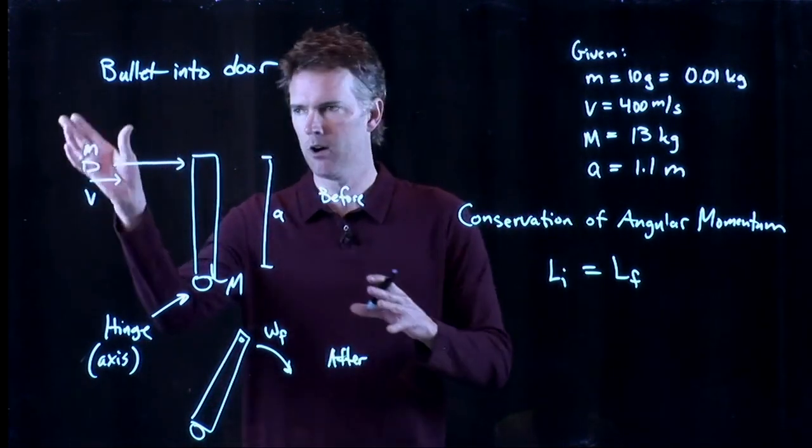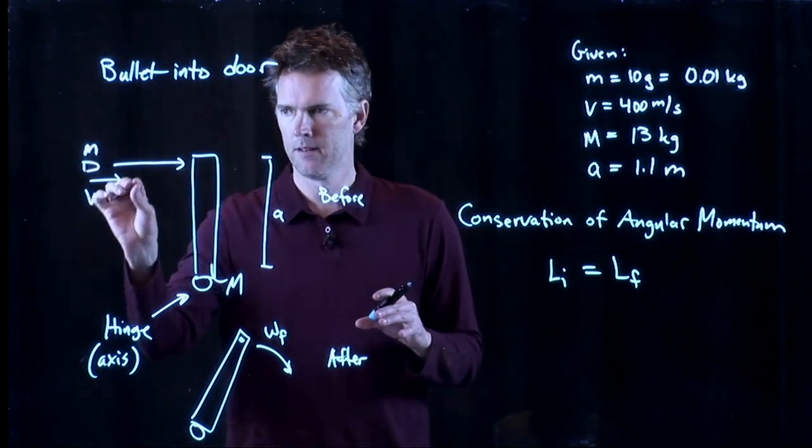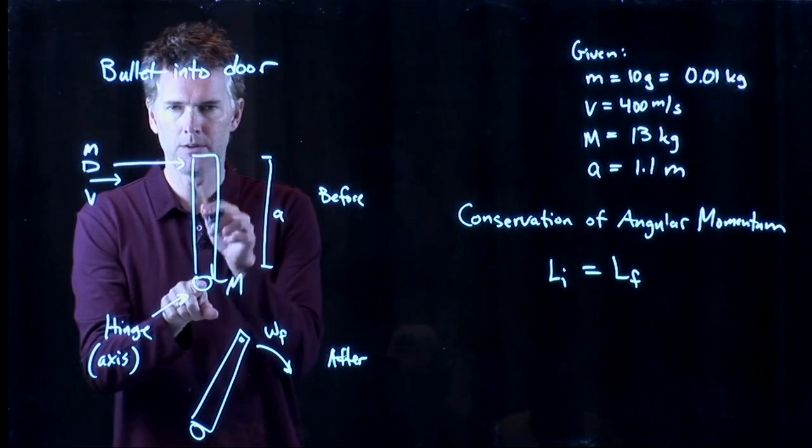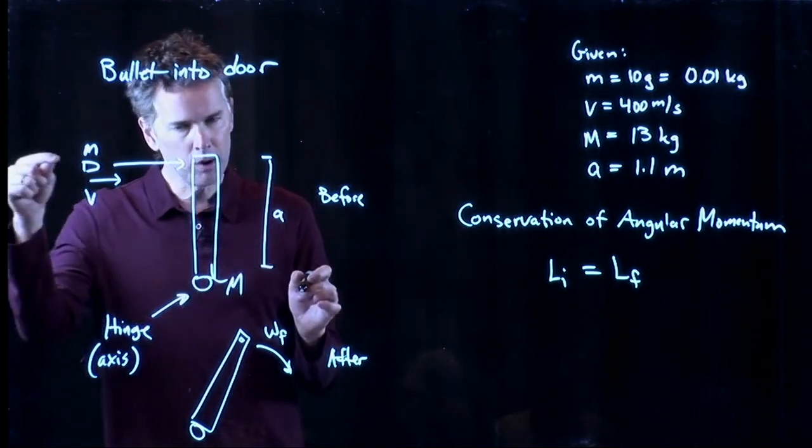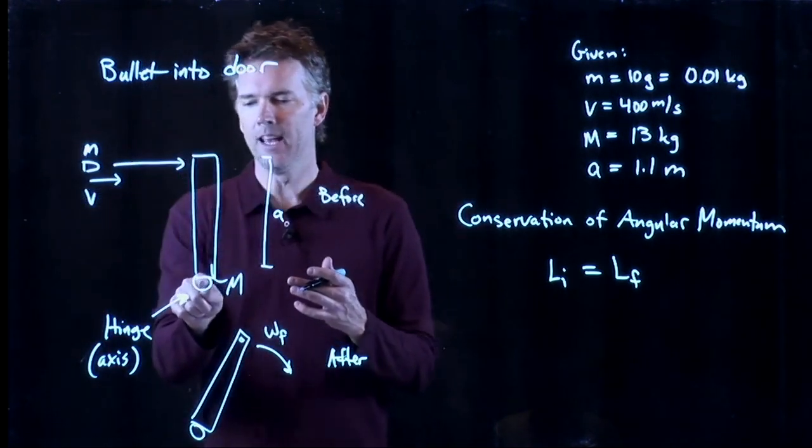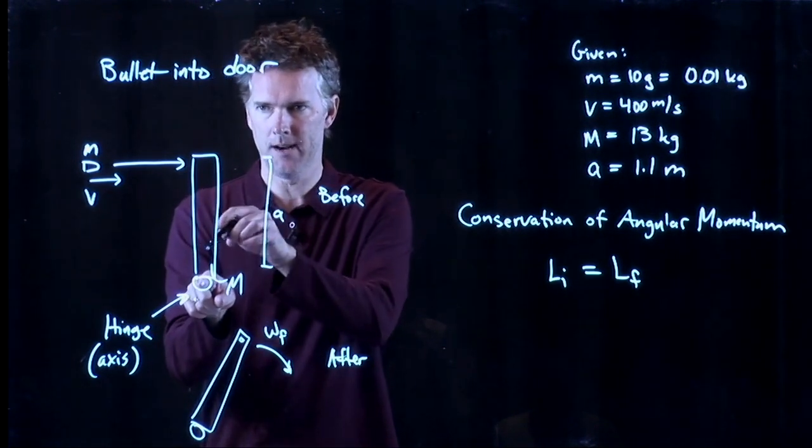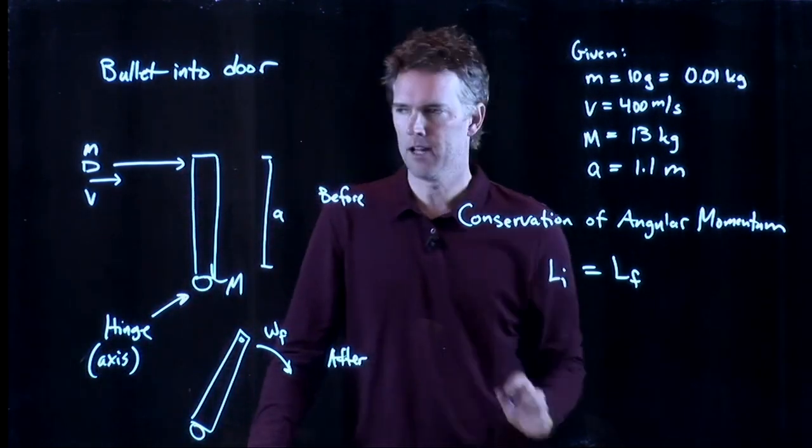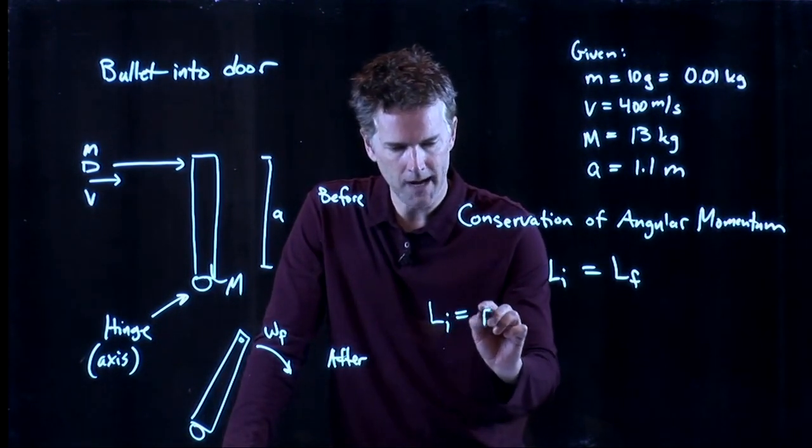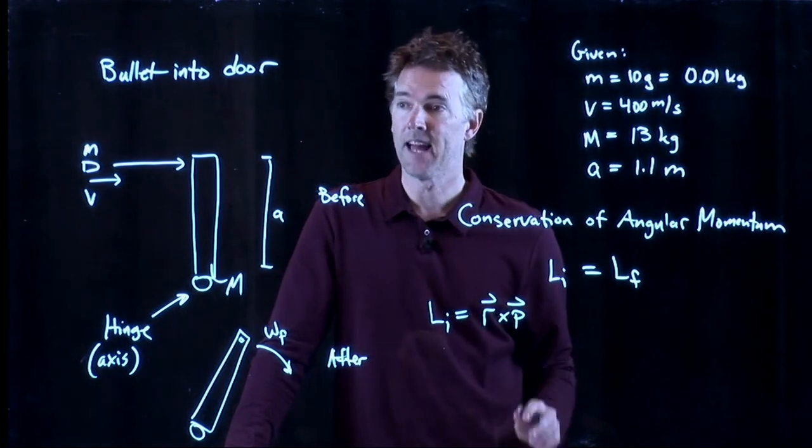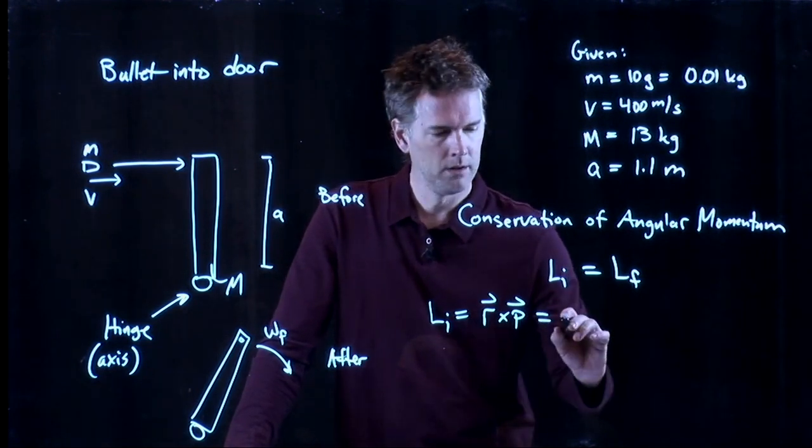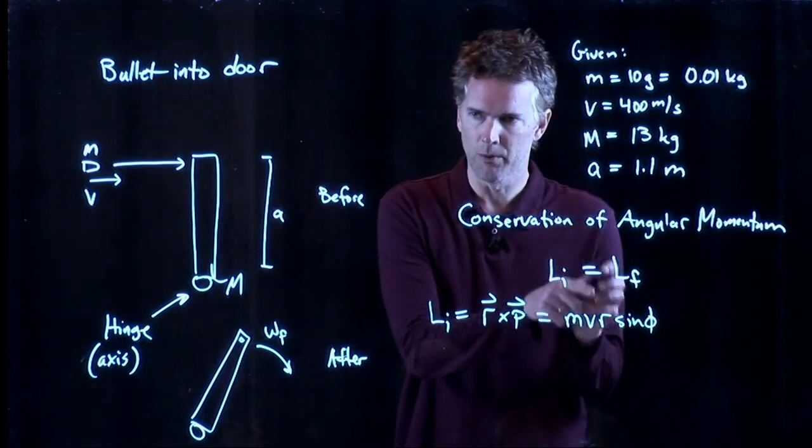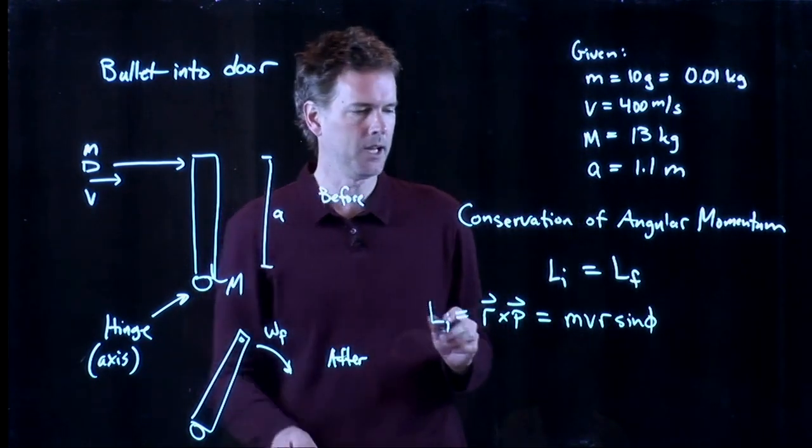So initially, the only thing moving at all is the bullet. Does that bullet have angular momentum? It does about this axis. Even though the bullet's moving in a line, you might think it's got linear momentum, which clearly it does. It also has angular momentum because we're looking about this point right here. And if I caught it with the door, we know what would happen. It would swing around. So it certainly has angular momentum.